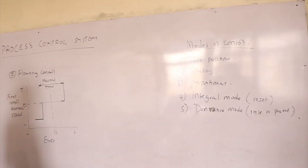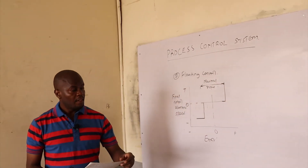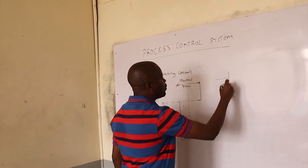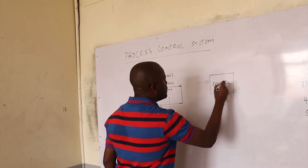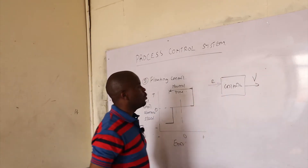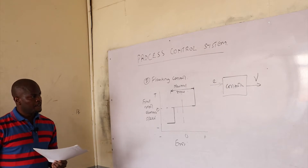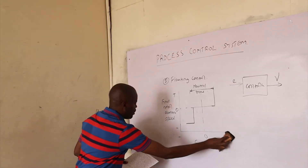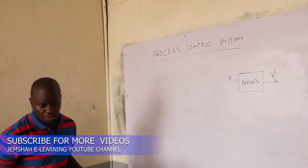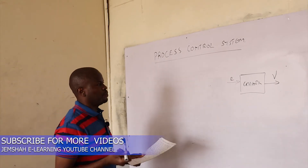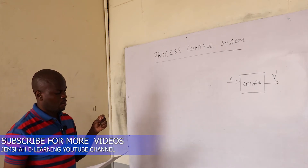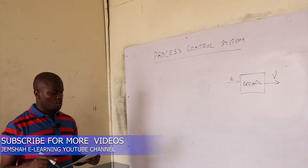Just like we mentioned about the modes of control, when you talk about proportional control, remember what is our input and what is our output. So what we have is the controller. Our input is always the error and the output will be in terms of voltage — input E and output V. In proportional control, the output is directly proportional to the error. Proportional control produces a change in the controller output that is proportional to the error signal.